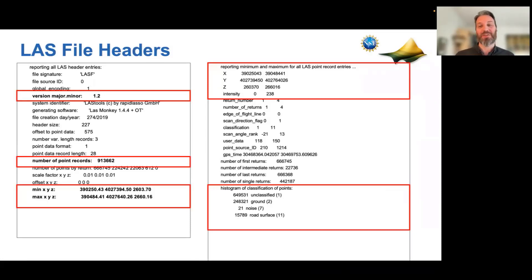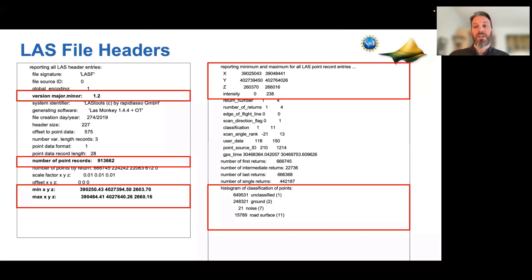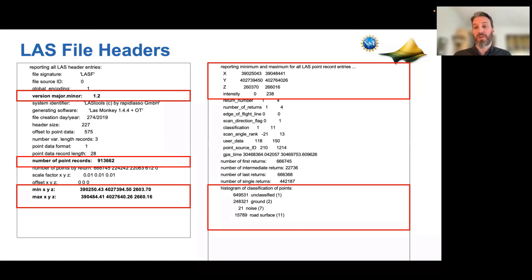All LAS files have a header with a lot of useful information about the data. If you want a quick look at your data — is it in the right area, do elevations make sense — you can use tools like LAStools or PDAL to open up the headers. You can see things like how many points there are, min/max stats on X, Y, and Z, and a histogram of the classifications. Are there ground classified points? Are there water classified points? So if you're having an issue with a file or just want to know more, the headers can give you a lot of information.